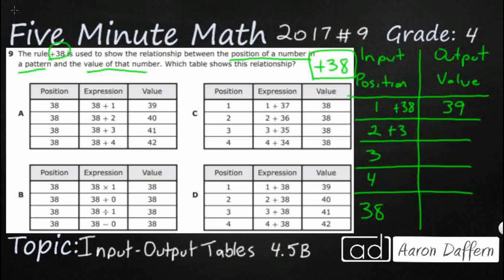2, our rule of plus 38, that is going to give us 40. Our position is going up by 1, our value is going to go up by 1. Because our rule is plus 38, that's going to be 41. So, 1 plus 38, that is going to be 42.